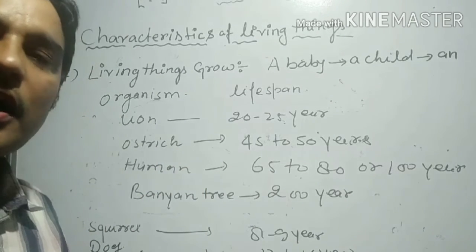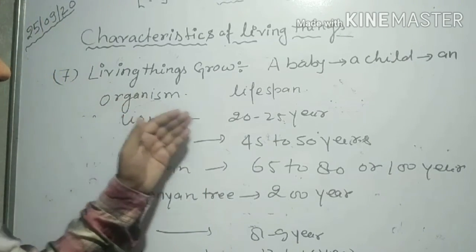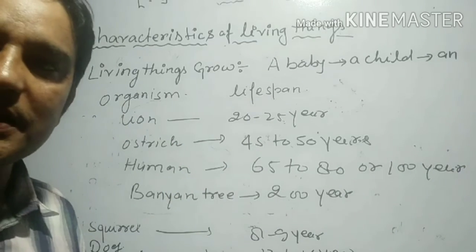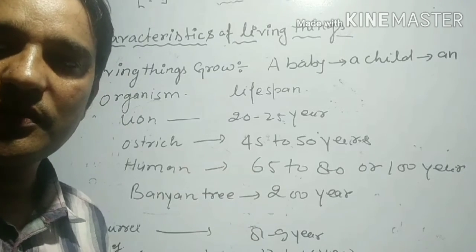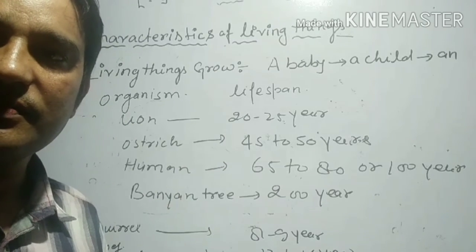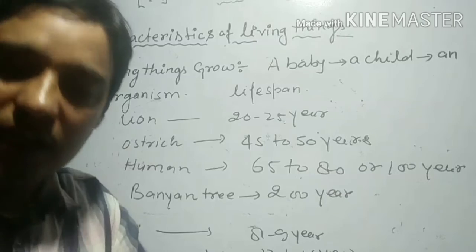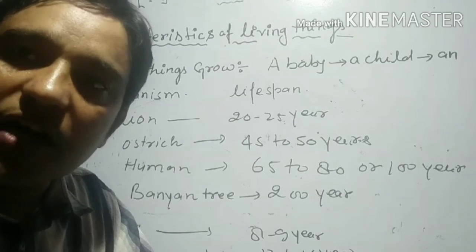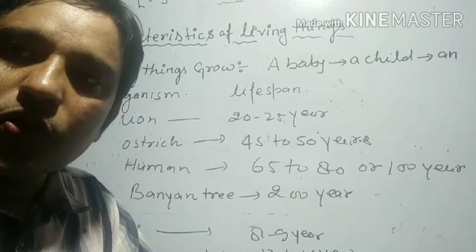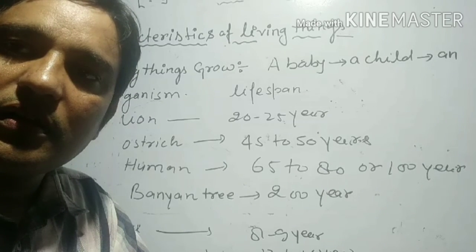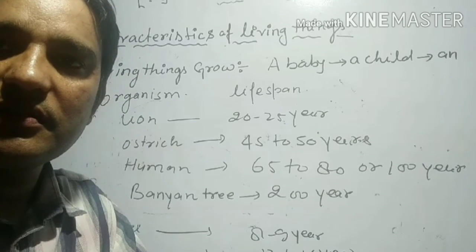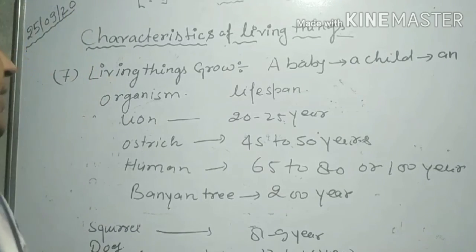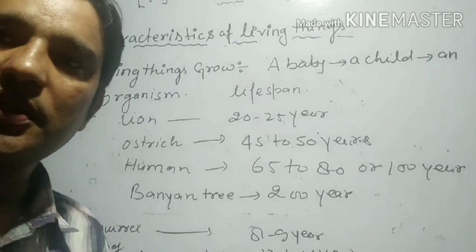These are the characteristic properties of living things. Now the next property: all living things reproduce. All living things reproduce their own kinds. Living things have an enormous capacity to give young ones of their own kinds. The next topic is living things reproduce.